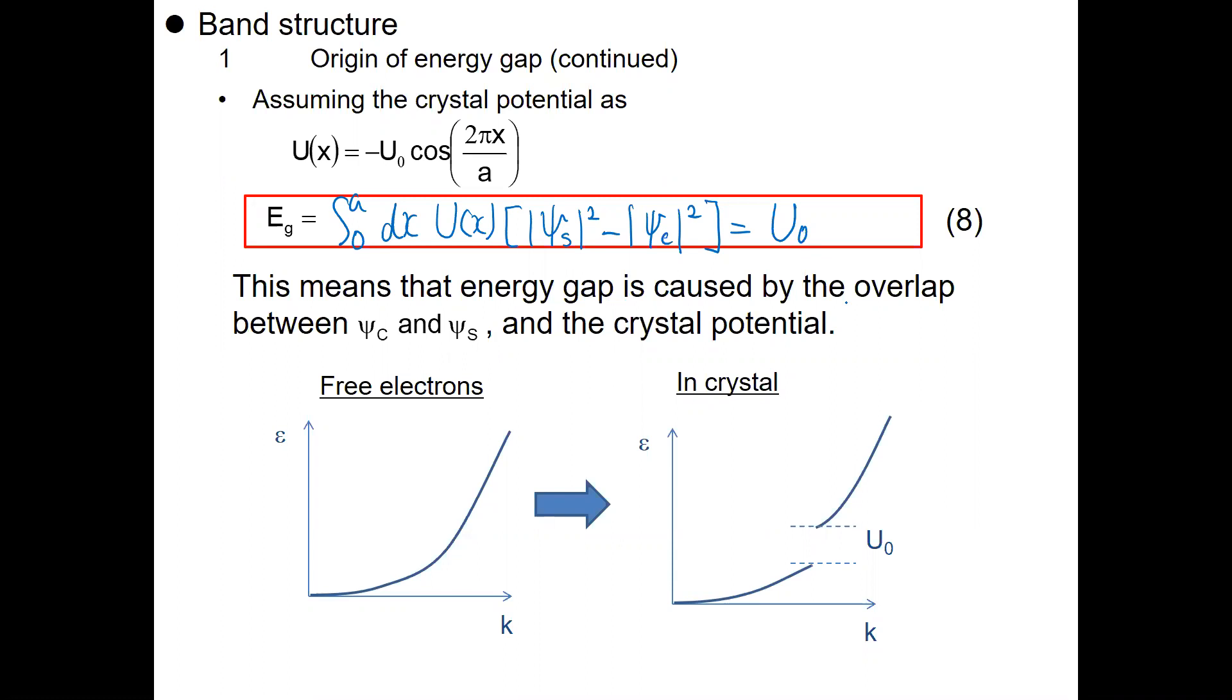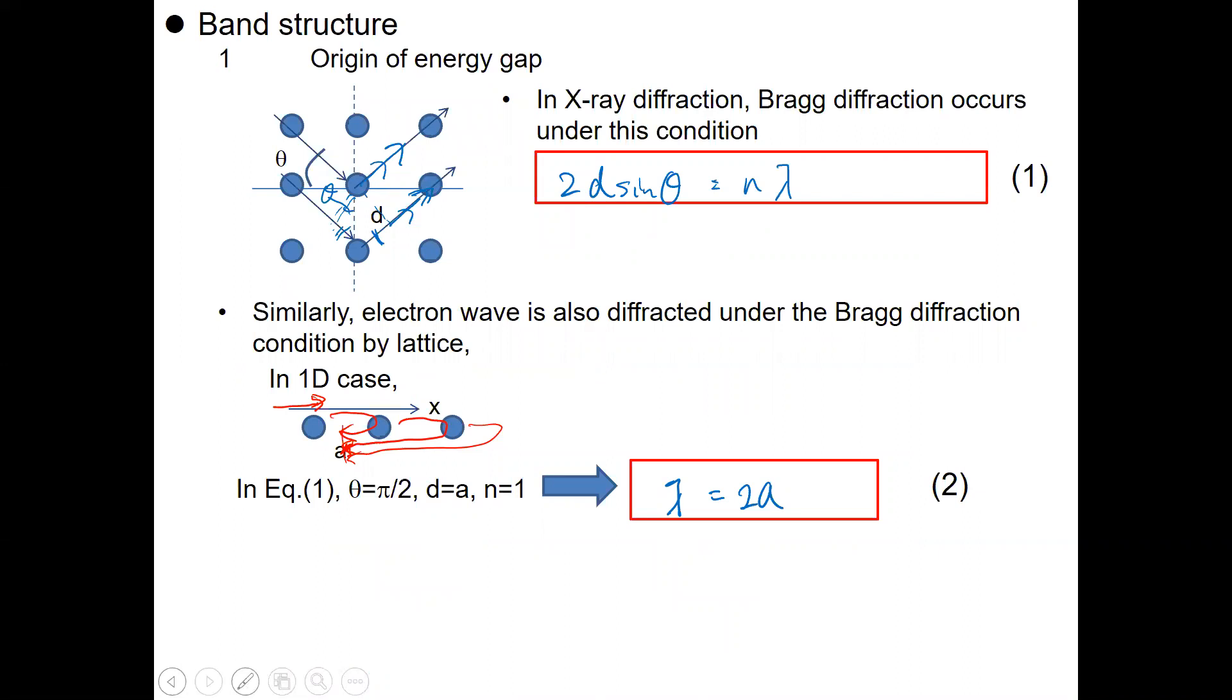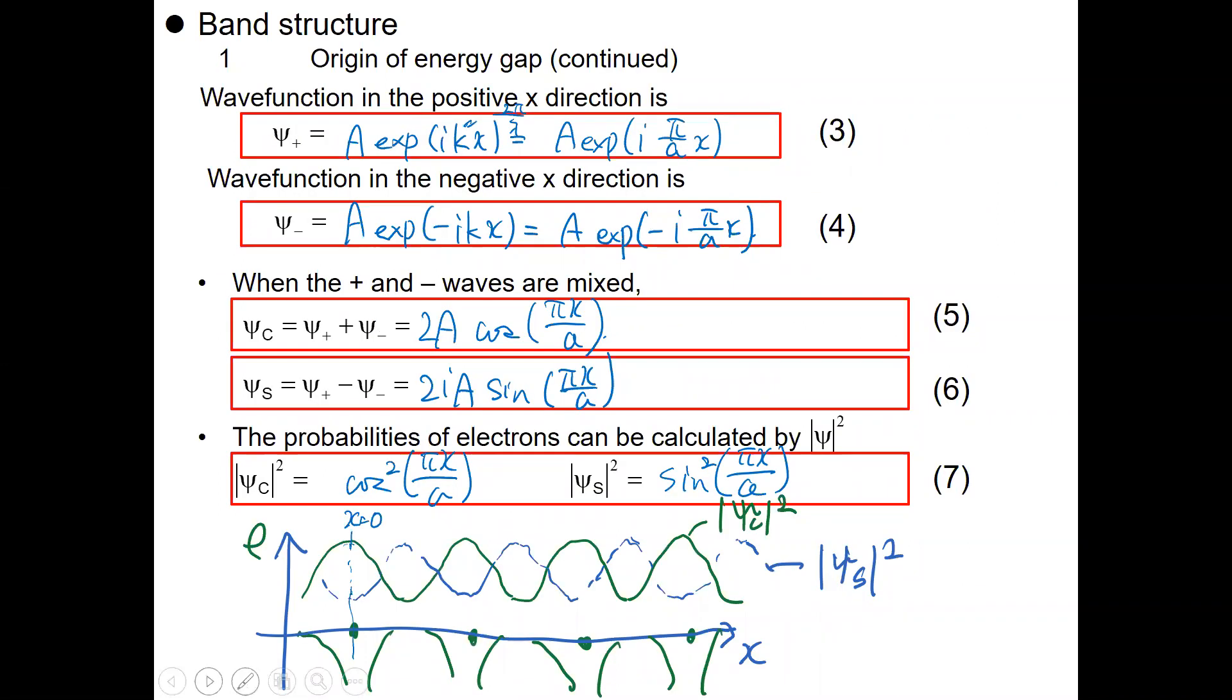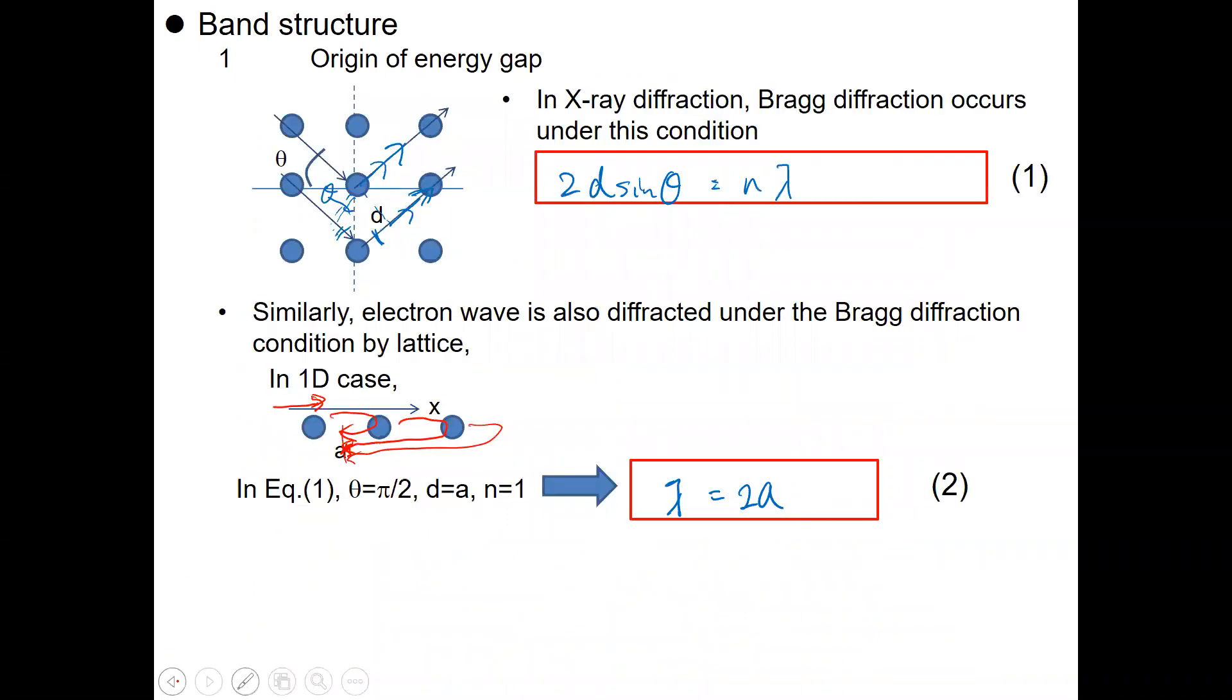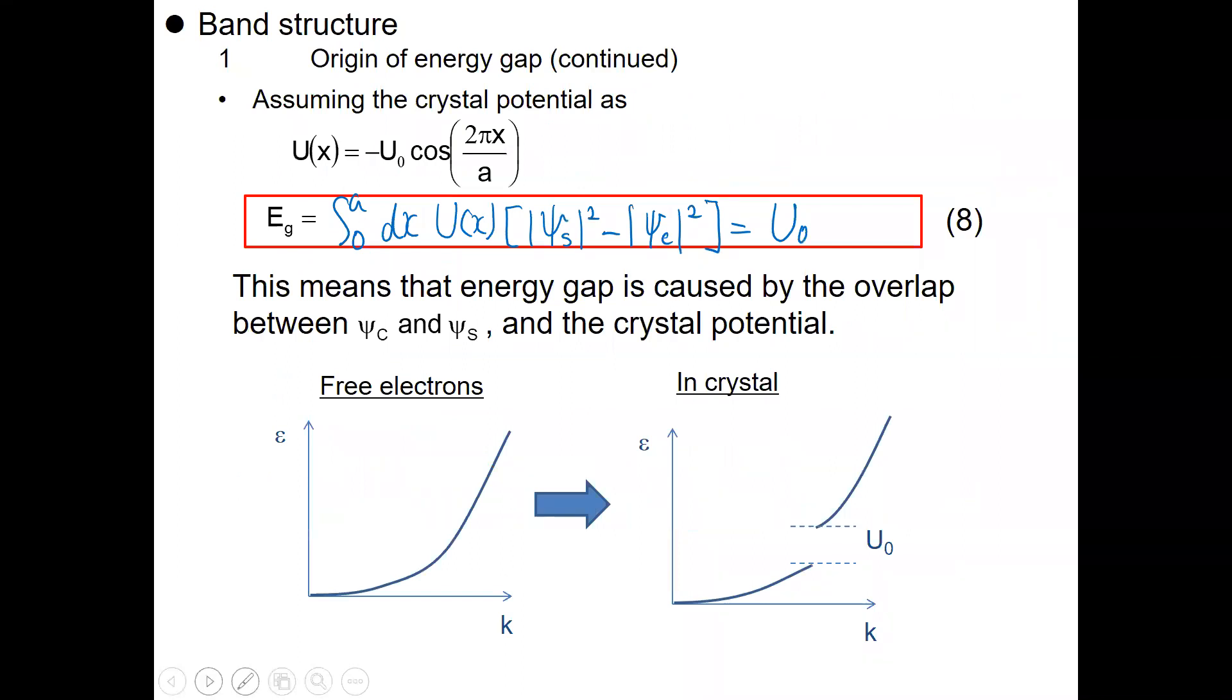This is due to the overlap with the crystal potential at a wave vector of k, which we calculated as k equals pi over a. This is obtained from the Bragg diffraction condition. This wave vector is somehow going back and forth backward, and that makes two types of waves. These two types of waves on the lattice potential give two different energies, an energy difference.